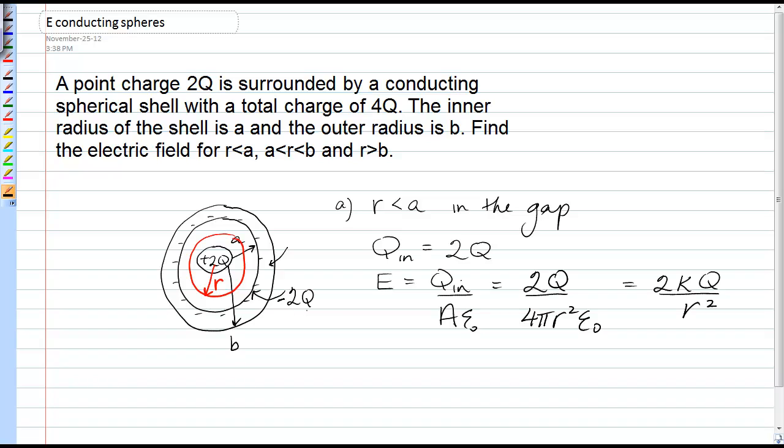Negative 2 is pulled away, so it's going to have to have 6Q on the outer surface, and that will be a positive charge. The way I came up with that 6Q is that 6Q on the outside minus 2Q on the inside equals the positive 4Q that the shell has in total.